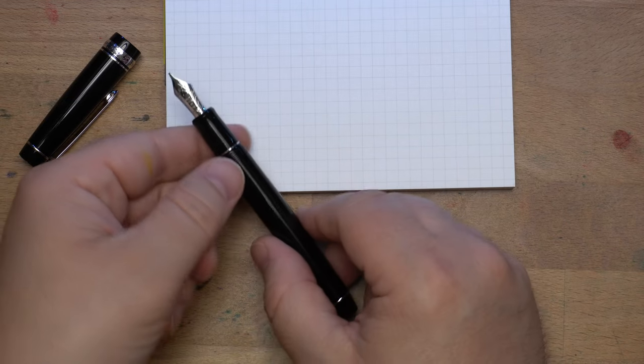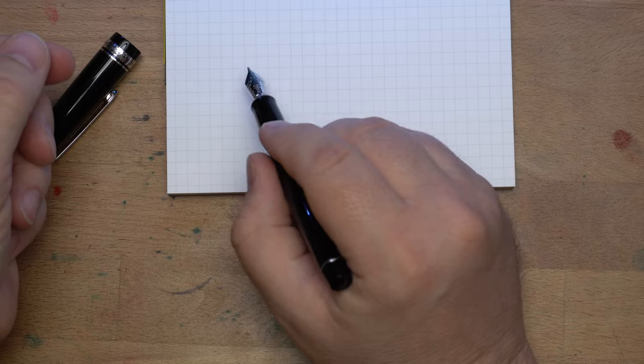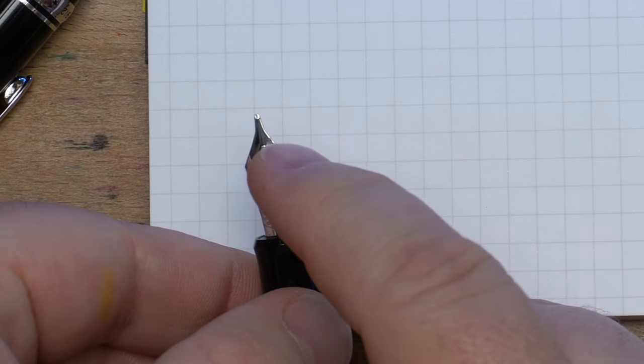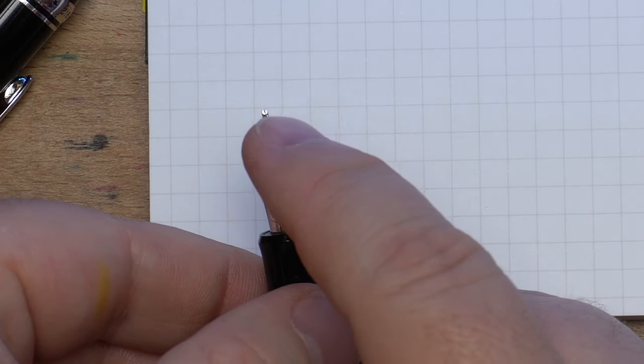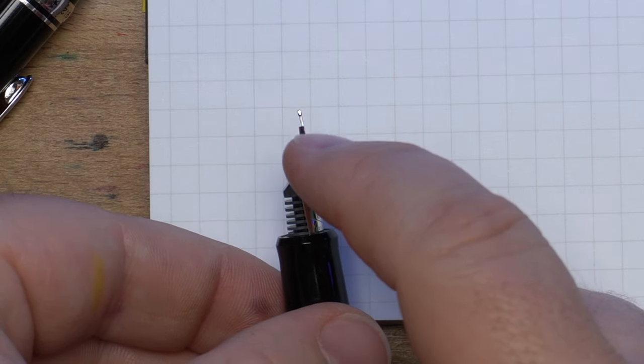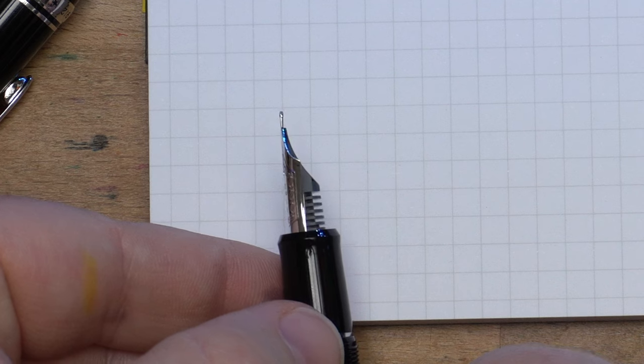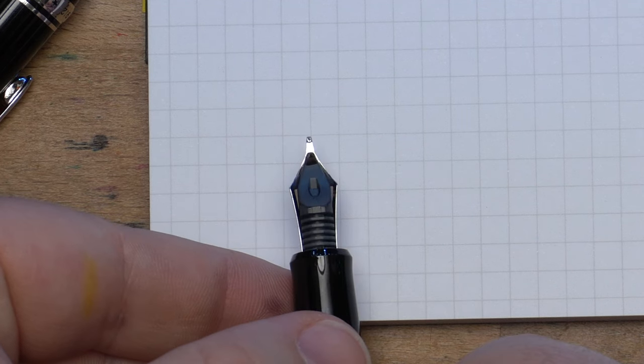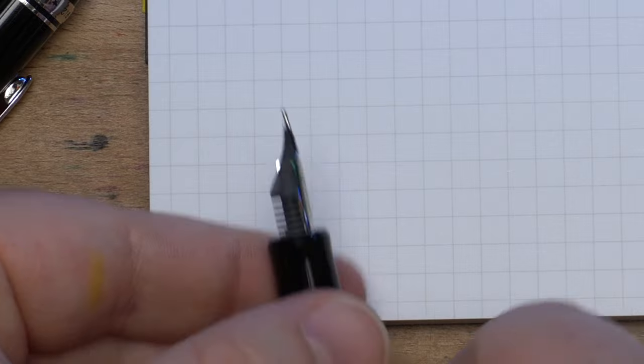So a little bit about nib grinds. This one, as you can see, has been ground. You can see a little bit of a flat spot here on the top of the tipping, as well as on the sides there and there. And also on the bottom, you have a little bit of a flat spot.